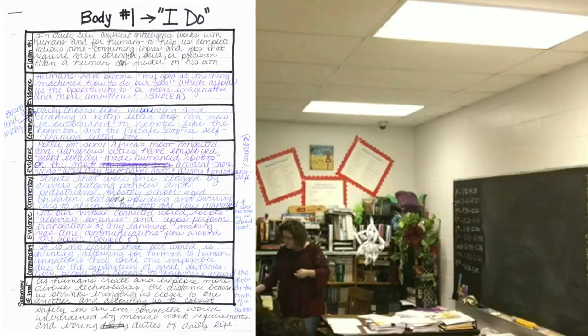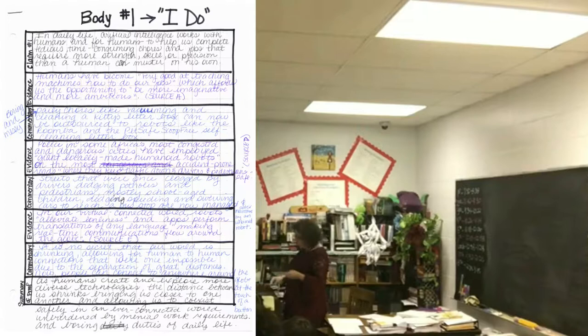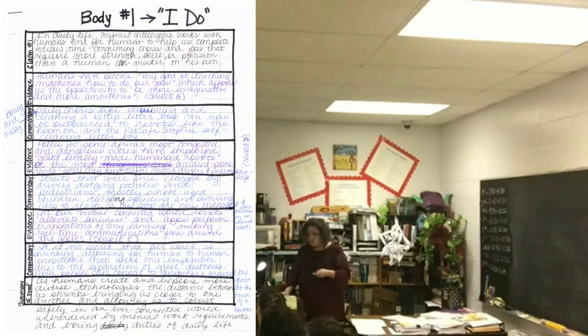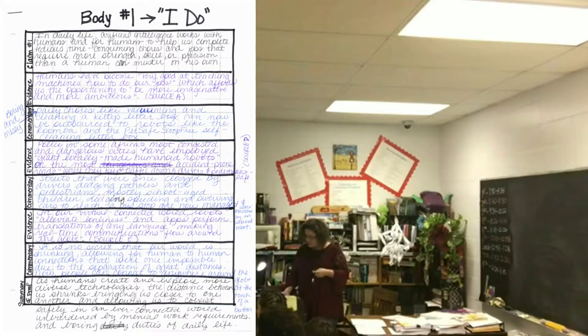Then we have to give our summary of proof, which kind of wraps it all up into a nice little package: 'As humans create and explore more diverse technologies, the distance between us shrinks, bringing us closer to one another, and allowing us to coexist safely in an ever-connected world, unburdened by menial work and requirements, and boring duties of daily life.' Do you see how I took all three sources and compacted them into one sentence and wrapped it up in a neat little package?